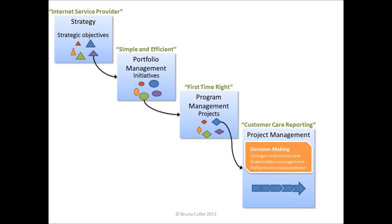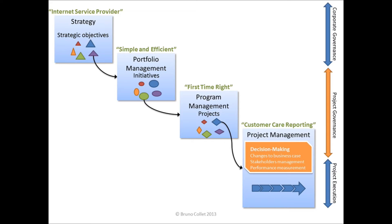All these are decision-making activities compared to many everyday activities in running a project, for example running the team, doing some detailed planning, detailed monitoring, and so on. Thanks to this picture, we can better understand the scope of project governance compared to these better-known fields. Project governance encompasses portfolio management, program management, and decision-making activities within project management. Above that, we have corporate governance, and below project governance, we have project execution.